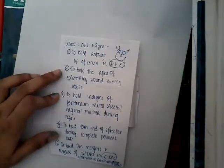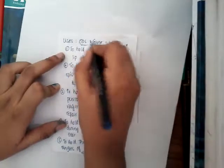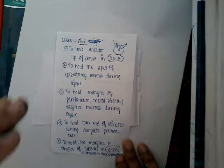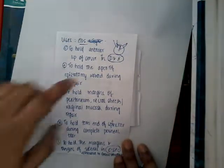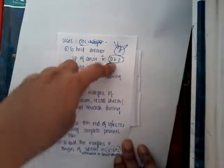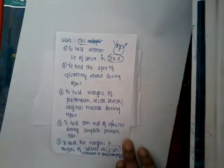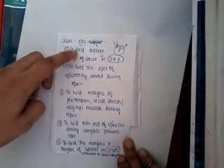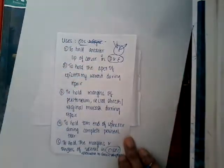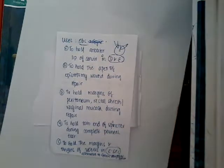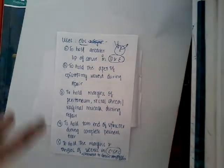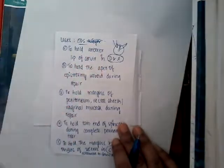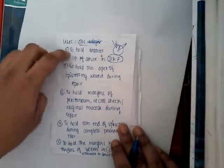What are its uses in obstetrics and gynecology? In obstetrics, there are three important procedures: dilatation and evacuation, caesarean section, and normal delivery. In dilatation and curettage, it is used to hold the anterior lip of the cervix, which allows the uterine cavity to be visualized.